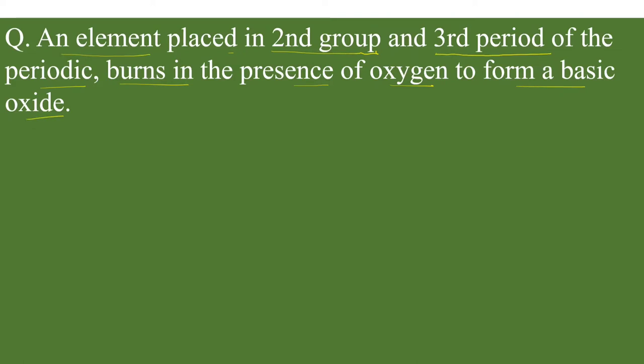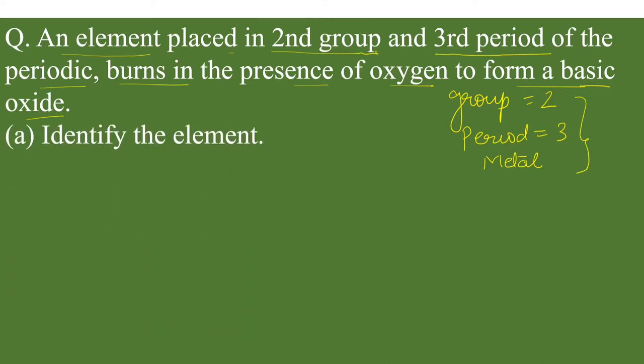Now children, what are the hints given in this question? Group number is second, period number is third, and basic oxide means it is an example of metal because metal oxides are basic in nature. So these three hints are given.